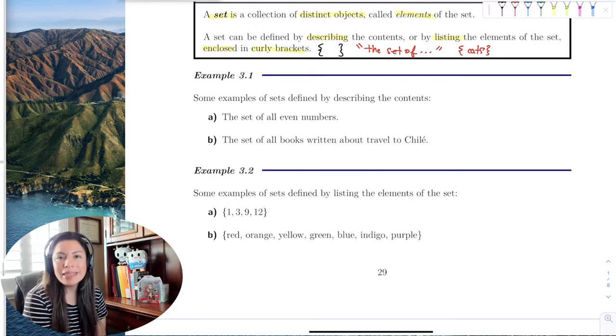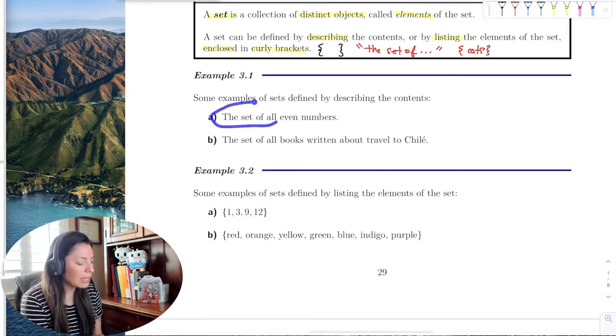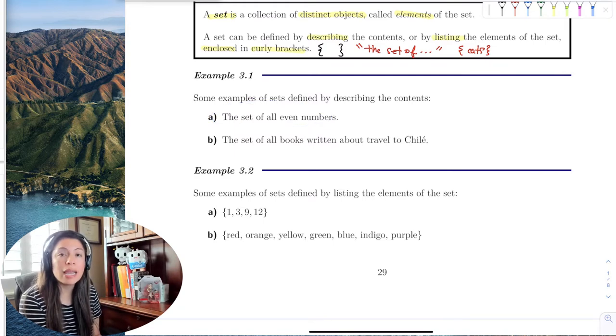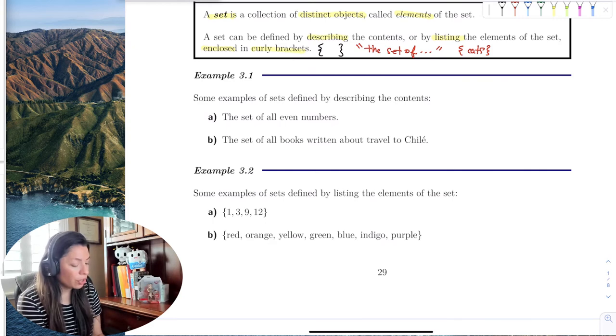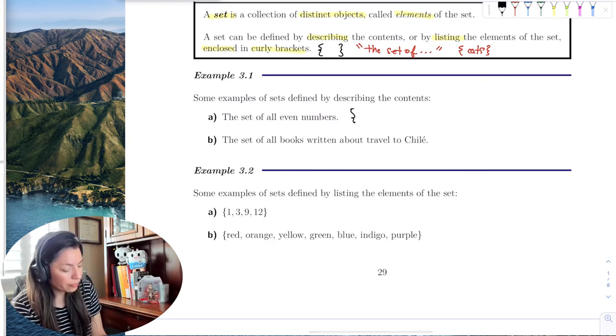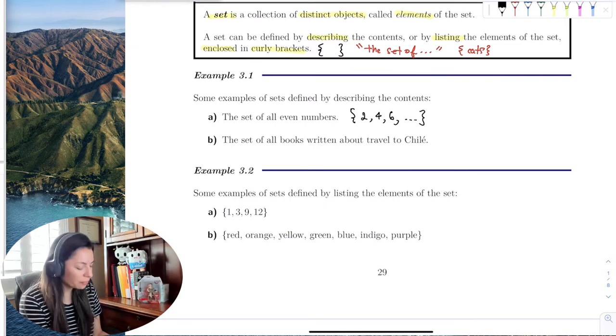So when we write the set, we say something like the set of all even numbers. But if we actually wanted to write it as set notation with elements, we would have curly brackets and then start with all even numbers, like that.